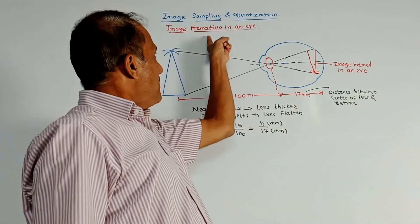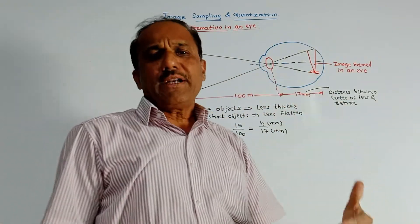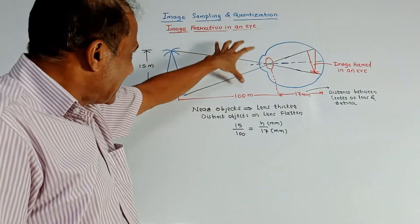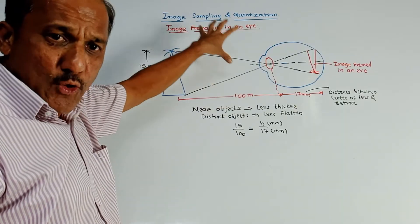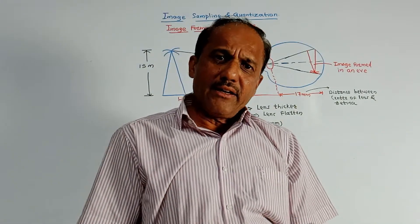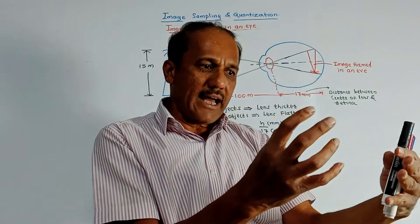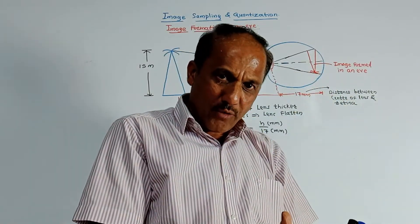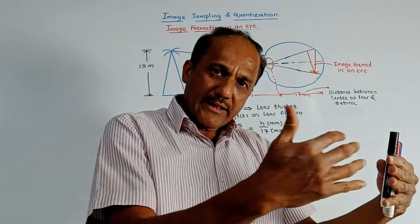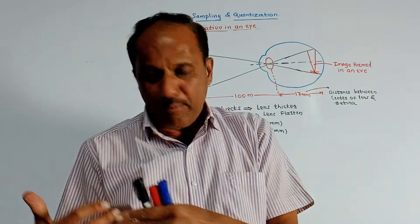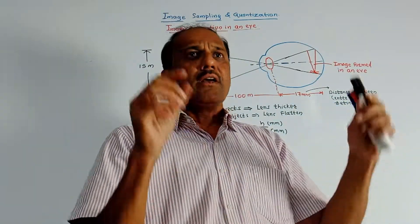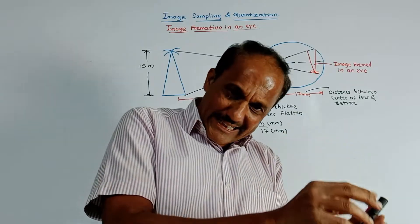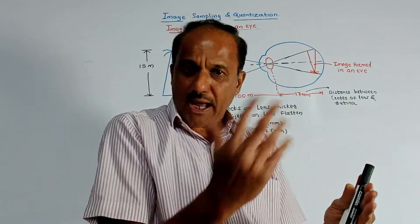The next point is image formation in an eye. You may expect a question: explain how an image is formed in an eye. We know that if you want to view any particular object, light is allowed to fall on it. Part of the light is absorbed by the object, which may be converted into heat, and some portion is reflected back — that reflected light we need to capture.